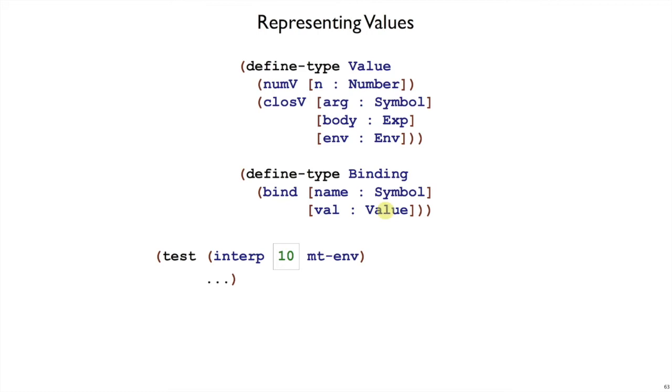If we look at the example, the old example, say interpreting just the number 10 in the empty environment, what we used to expect back was just a plain 10, but now we expect back a value, interp always produces a value, so it has to be num v 10. So that's why we've been putting e on the end of num e, to clarify that's a num expression, num v 10 means it's a value, it's something that comes out of interp instead of going into interp.